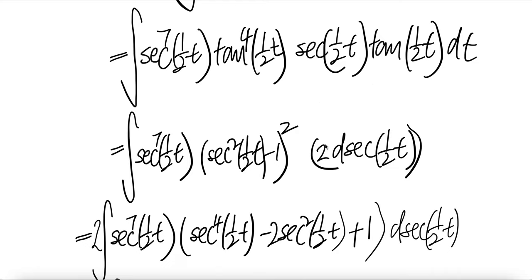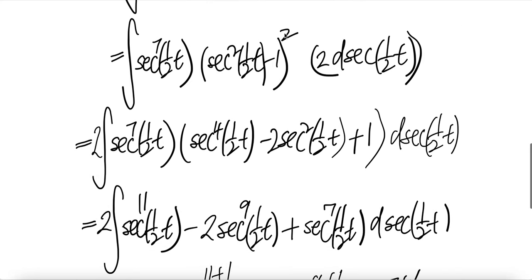Expand this: it will be sec to the power four half t minus twice the cross term, two sec square half t, and then minus minus is positive one.